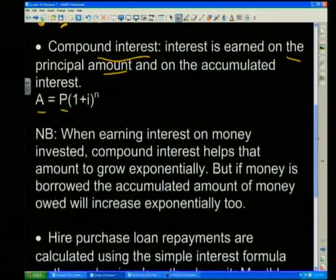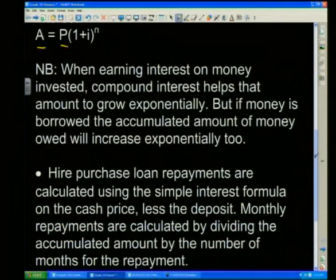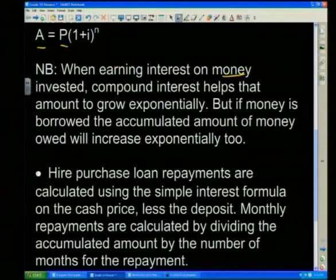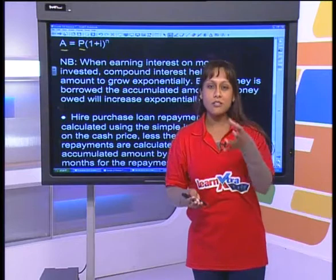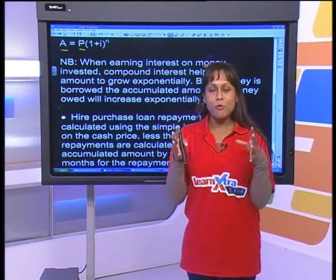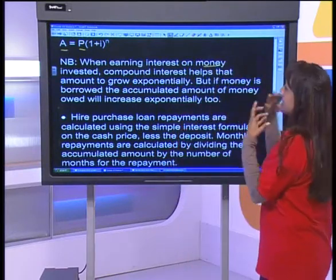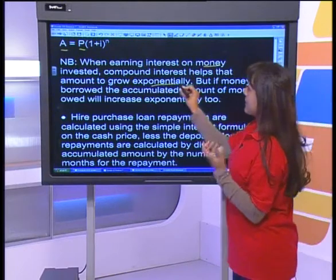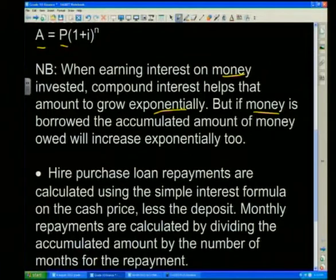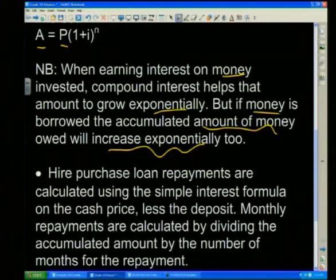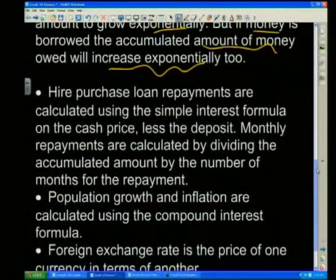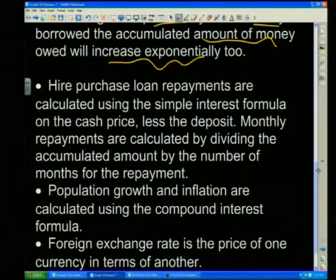An important thing to remember is that compound interest is fantastic for money invested — it makes your money grow exponentially. However, the downside is that if you're talking about loans and borrowing money, your amount still grows exponentially, which is not good. If you've borrowed money and the accumulated amount is growing exponentially, you'll end up paying much more.